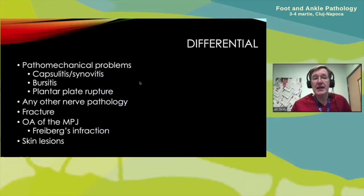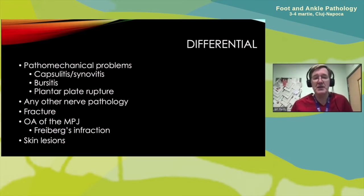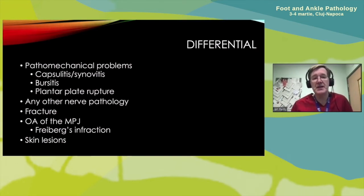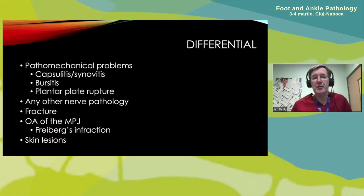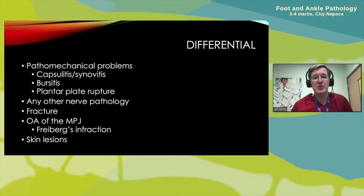I'm keen to differentiate it from other causes of metatarsalgia. Patients can present with capsulitis or synovitis of a metatarsophalangeal joint — particularly the second MTP joint, which is very commonly misdiagnosed in the second interspace. Bursitis can be a differential that's missed. Problems with the plantar metatarsophalangeal joints, or rupture of the plantar plate, can also masquerade as Morton's metatarsalgia. Any other nerve pathology can present similarly — I've even seen problems within the tarsal tunnel masquerading as a Morton's neuroma.